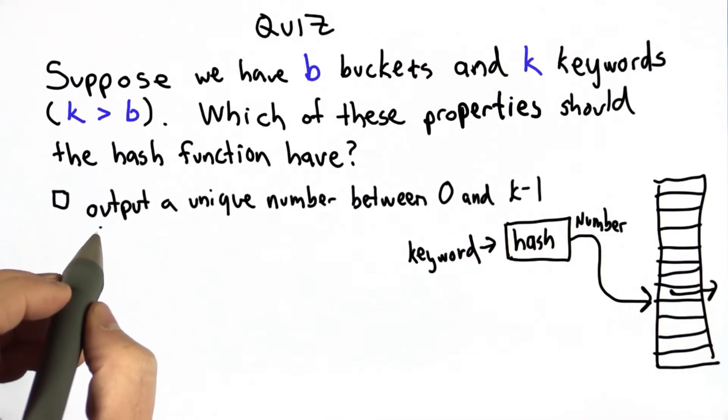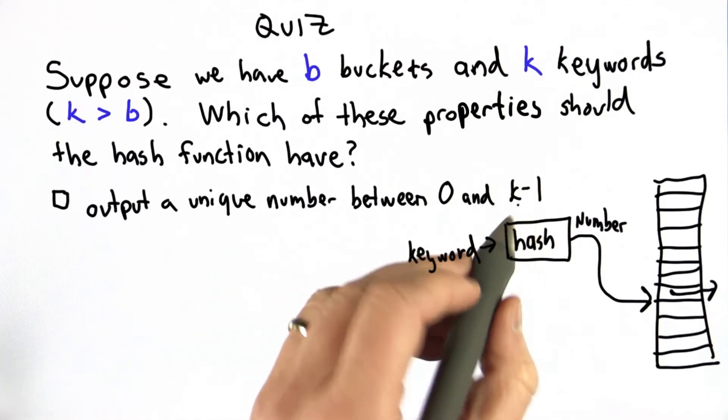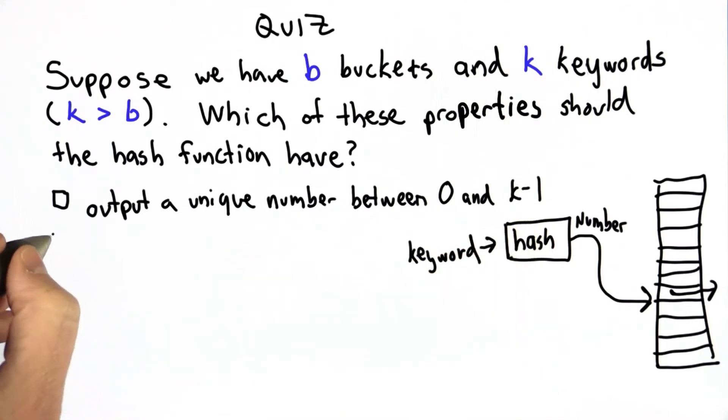The first choice is output a unique number between 0 and k-1, so each keyword maps to its own output number.